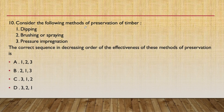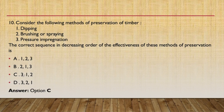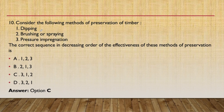Tenth question: the correct sequence of timber preservation methods in decreasing order of effectiveness — dipping, brushing and spraying, and pressure impregnation — is option C: 3, 1, 2. Pressure impregnation is most favorable because the preservative is applied under pressure, allowing it to enter the pores of the wood uniformly. Dipping is second as it covers all sides. Brushing and spraying is least effective as it is a manual method.